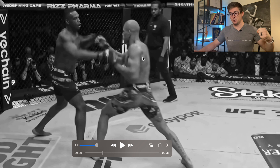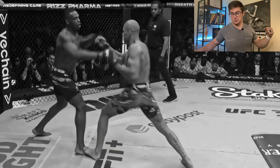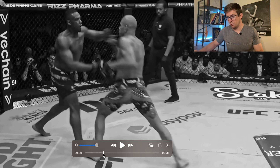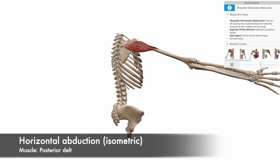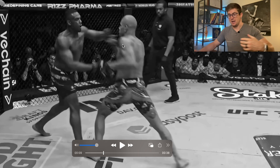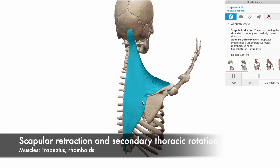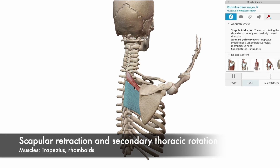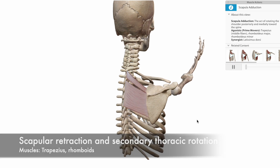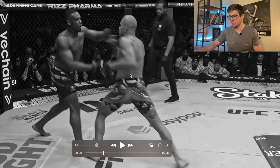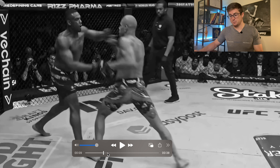His thoracic spine is preloaded into left thoracic rotation, and he's got that arm about to load up — right there. He's in a position called horizontal abduction, but he's actually holding it isometrically. He's also got a little bit of scapular retraction going for shoulder stability to make sure he's nice and loaded. The rhomboids and middle trap are secondarily rotating the thoracic spine, along with the lumbopelvic muscles — the internal and external obliques, quadratus lumborum, and all the erector spinae — that play a role in lumbopelvic control.